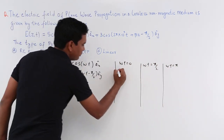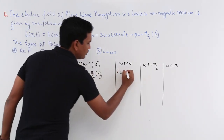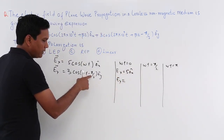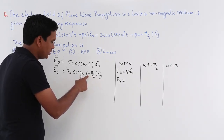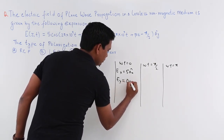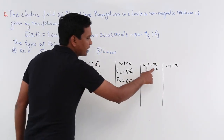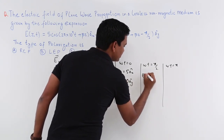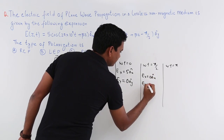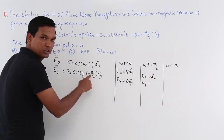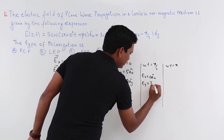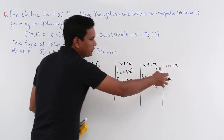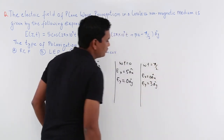At ωt = 0: Ex = 5 cos(0) = 5 Ax cap, and Ey = 3 cos(−π/2) = 3 cos(π/2) = 0 Ay cap. At ωt = π/2: Ex = cos(π/2) = 0 Ax cap, and Ey = 3 cos(π/2 − π/2) = 3 cos(0) = 3 Ay cap. At ωt = π: Ex = cos(π) = −5 Ax cap, and Ey = 3 cos(π − π/2) = 3 cos(π/2) = 0. This is enough to conclude the type of polarization.